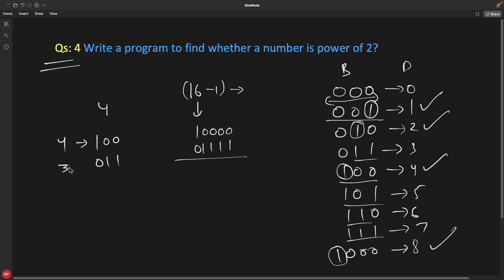If you do bitwise AND operation between these two, the result is zero. So can we safely say that if my number is bitwise ANDed with n-1, and the result is zero, then n is power of 2? Yes, because we can see the result here.